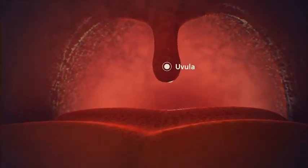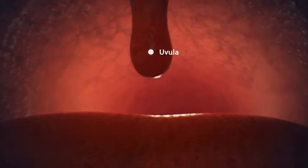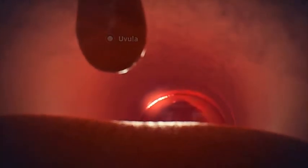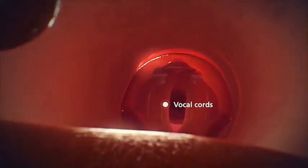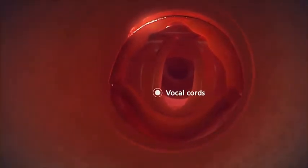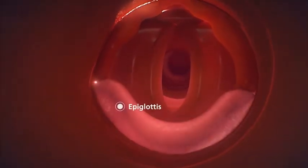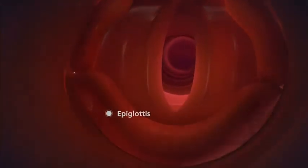The throat is a passageway that carries food to the esophagus and air to the lungs. At the entrance to the windpipe, the voice box contains vocal cords that open and close to produce the voice and sound. This is covered by a stiff flap of tissue called the epiglottis, which prevents food from entering the lungs.